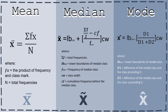Lastly, the mode. We all know that the mode is the highest number of values in the frequencies, where Lb is the lower boundary of the modal class, D1 is the difference between the modal class and the class before it, and D2 is the difference between the modal class and the class succeeding it.